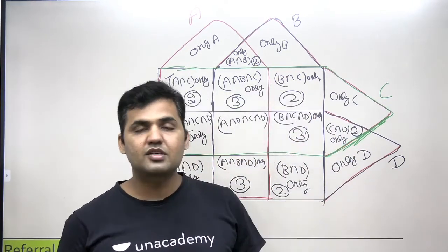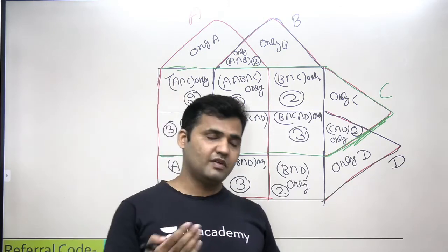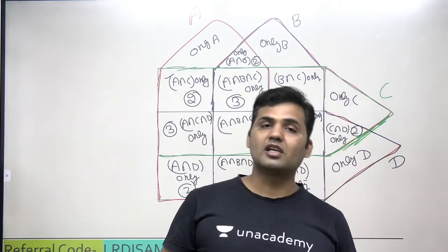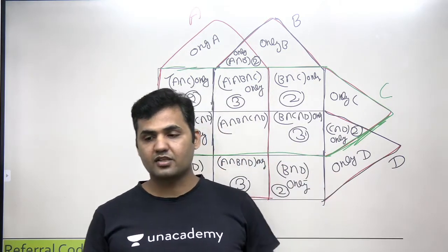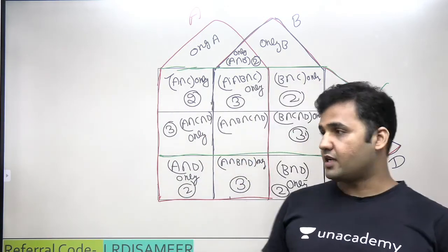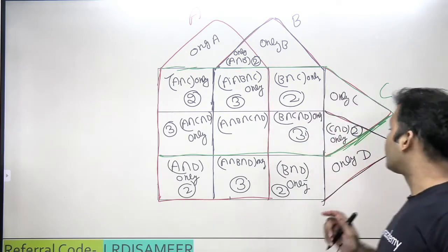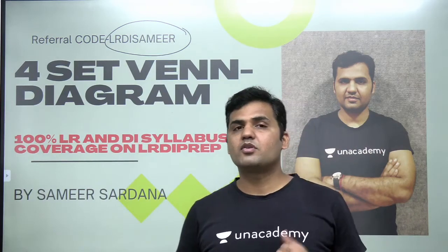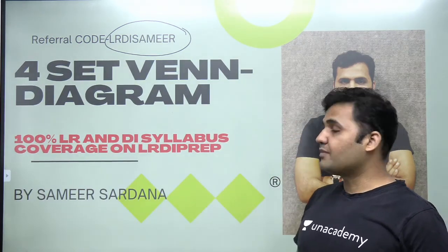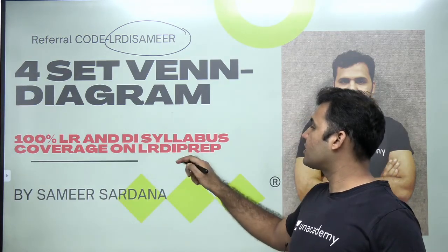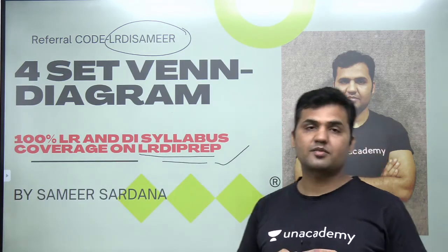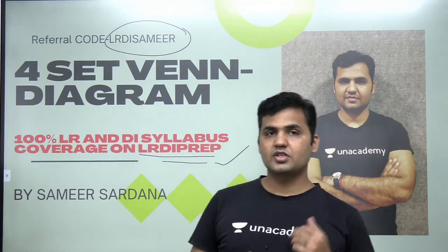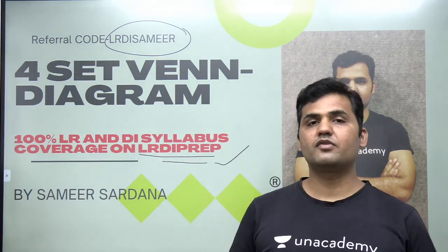In the next video, I'll be discussing a complete set based on this four-set Venn diagram theory. First, make sure you know how to identify the regions and areas. Thank you for watching. If you wish to attend my live sessions on Unacademy Plus, join using my referral code LRDI Sameer for 10% off. Also subscribe to the LRDI Prep channel, where you'll get 100% theory coverage on LRDI. See you in the next part!